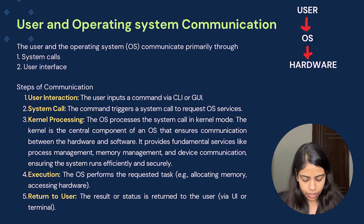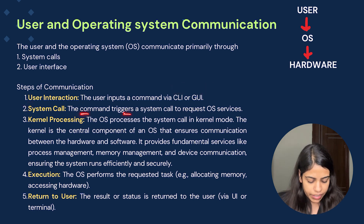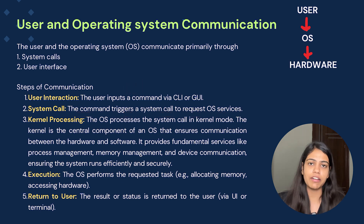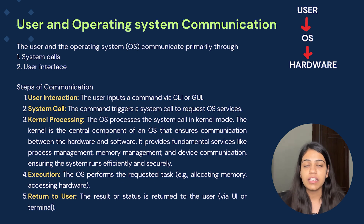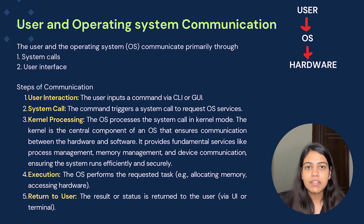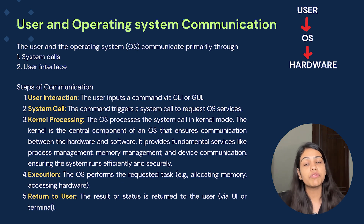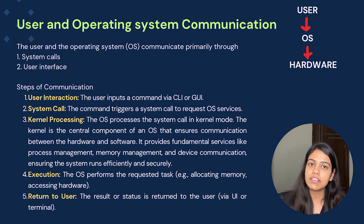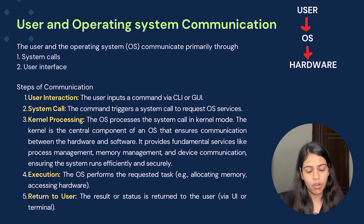The second step is system call. The command triggers a system call to request OS services. So first the user inputs a command via the command line or the graphical user interface. Once the input is done, it goes to the operating system. For example, if you want to print a document, write anything in a document, or save a document — all those things are passed via the system call to the operating system.